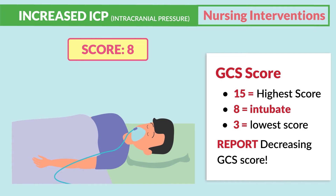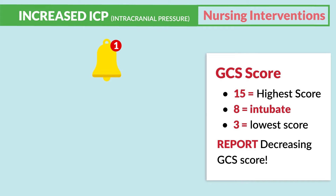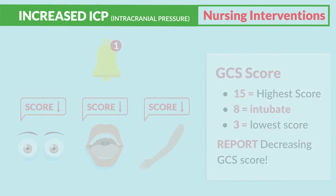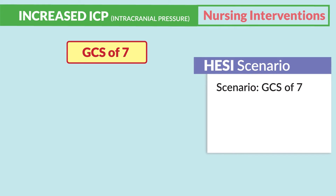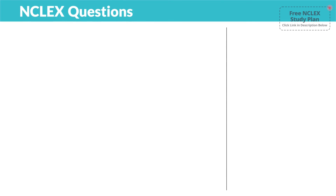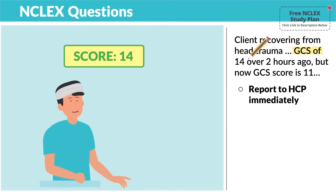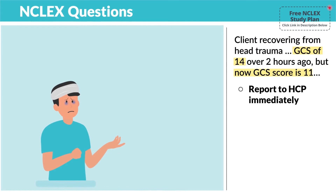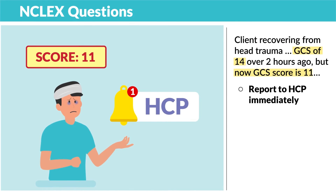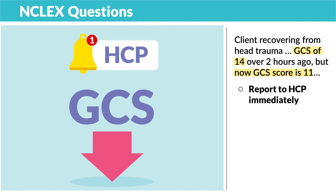The patient slips into a coma. The priority is to notify the provider immediately for any GCS numbers that are decreasing — they should only be increasing. The HESI mentions a scenario of a GCS of 7, stating the patient will require complete care because they're in a coma. Remember, less than 8 we intubate. A common NCLEX question involves a client recovering from head trauma with a GCS of 14 two hours ago, now dropping to 11 — we must report this to the HCP immediately. Any decrease in GCS is priority to report.